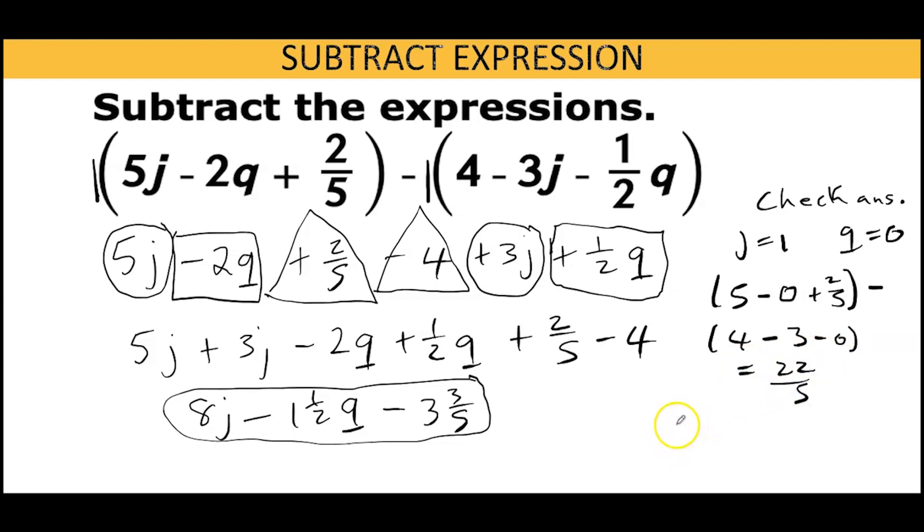Now let's substitute j equals 1 and q equals 0 in our simplified answer. 8 times 1 gives us 8, minus 1 and 1/2 times 0 gives us 0, minus 3 and 3/5. When we calculate 8 minus 3 and 3/5 we get 22/5. Both answers are the same, so we know our expressions are equivalent and our answer is correct. Thank you for watching, goodbye.